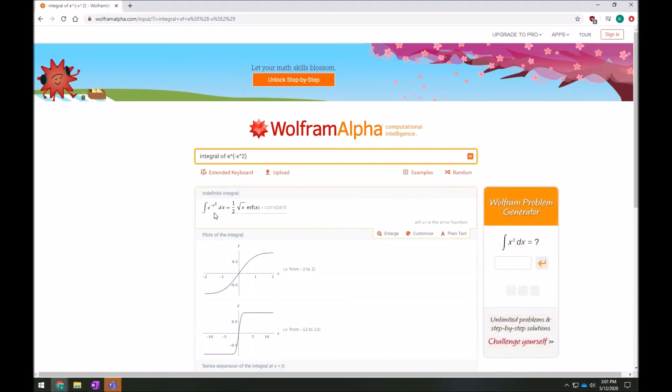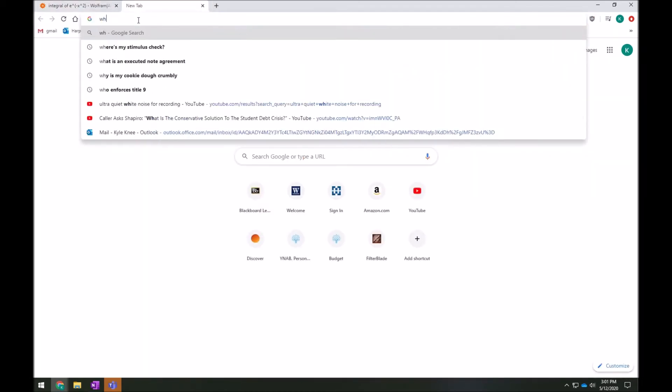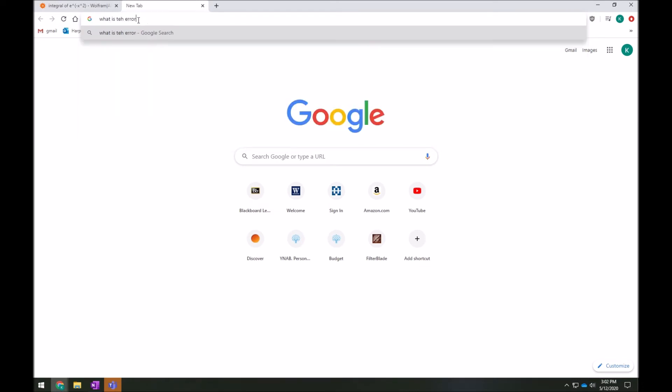All right, Wolfram. Here it is. That's the thing I'm looking for. And it says that my answer is 1 half root pi erf x plus a c. Okay, what the heck is erf x? Oh my gosh. Okay. Oh, wait, right down here it says erf x is the error function. Okay, well what the heck do I do with that? Let's see. What is the error function?